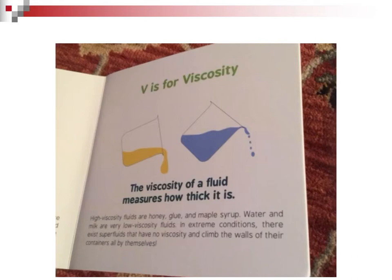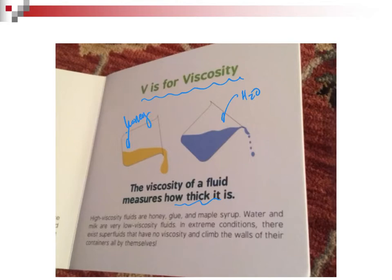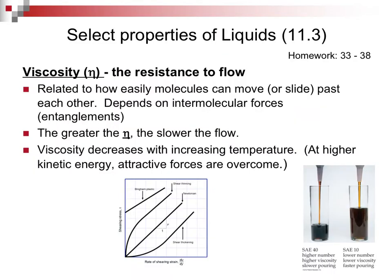I begin this section with a page from the board book that my poor little grandson got when he was born — it's an ABC of science terms, and one of them is V for viscosity. Viscosity of a fluid measures how thick it is. This is water, this is honey — you can see they flow at different rates. Viscosity, symbolized by this Greek letter, is the resistance to flow.